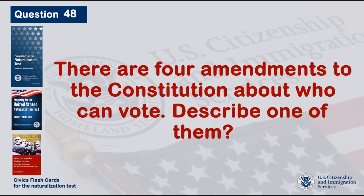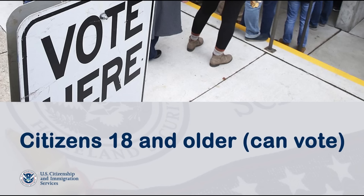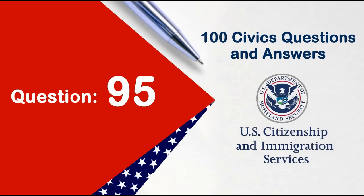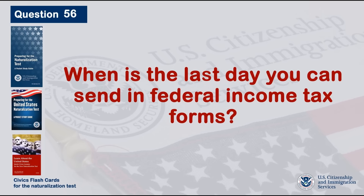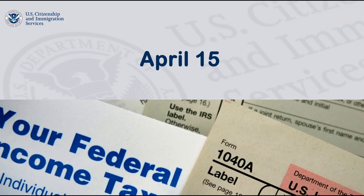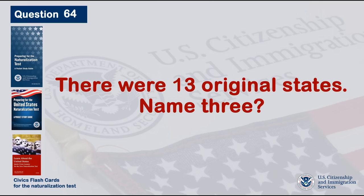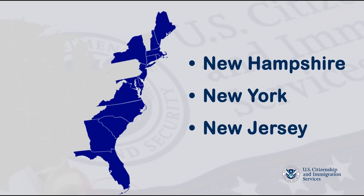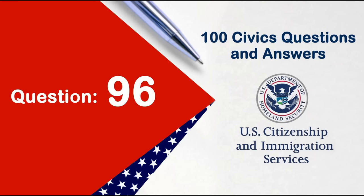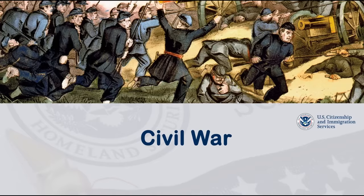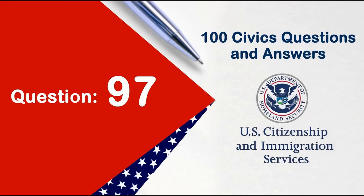There are four amendments to the Constitution about who can vote. Describe one of them. Citizens eighteen and older. When is the last day you can send in federal income tax forms? April 15th. There were thirteen original states. Name three. New Hampshire, New York, New Jersey. Name one war fought by the United States in the 1800s. Civil War.